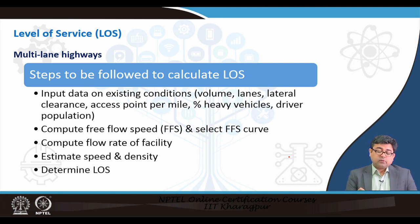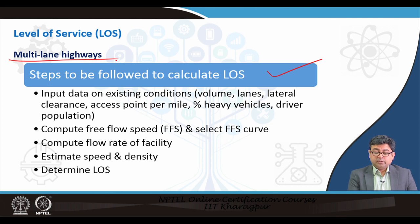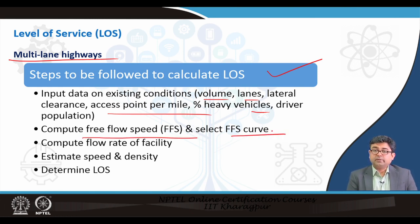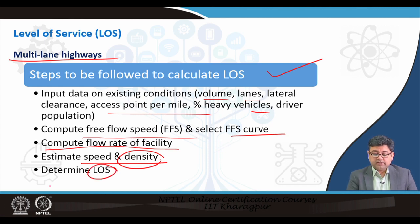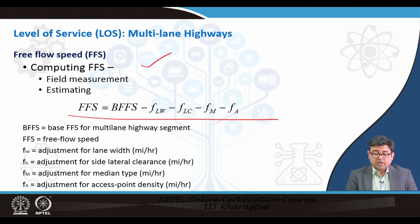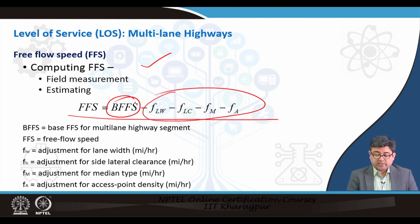Let us go through the steps to calculate the level of service of multi-lane highways. In the first step, you need inputs of existing conditions: volumes, lanes, lateral clearance, access points per mile, percent of vehicles, and driver population. After knowing these inputs, you calculate the free flow speed and select one of the free flow speed curves. After knowing the free flow speed, you calculate the flow rate of the facility, then estimate speed and density, from which you will get the level of service.